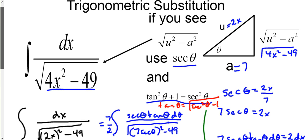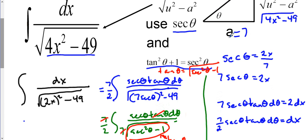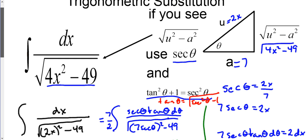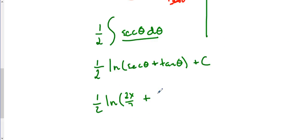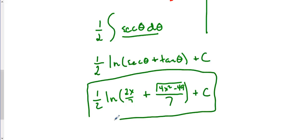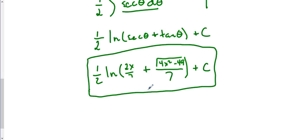We're not done yet — we need to back-substitute using our triangle to replace all the theta's with x's. From the triangle, sec θ = 2x/7. For tan θ, which is opposite over adjacent, that's √(4x² − 49) / 7. So the final answer is (1/2) ln|2x/7 + √(4x² − 49)/7| + C. If you took the derivative of this, you'd get the original integrand back.